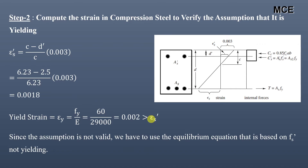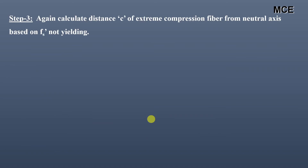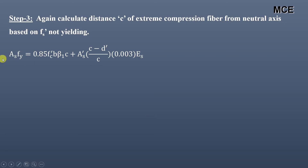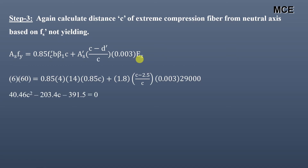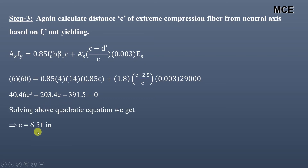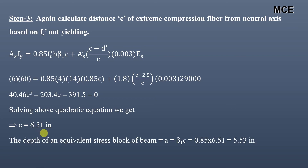We have to use the equilibrium equation based on FS' not yielding. We will again calculate C based on FS' not yielding, using the actual value of stress in the compression steel. Writing the equilibrium equation: AS times FY equals 0.85 FC' times B times beta1 times C, plus AS' times FS', where FS' equals (C minus D') divided by C times 0.003 times Es. Putting values of different quantities, we get a quadratic equation in terms of C. Solving this quadratic equation, we get C equals 6.51 inch. The depth of the equivalent stress block is beta1 times C, which comes out to be 5.53 inch.